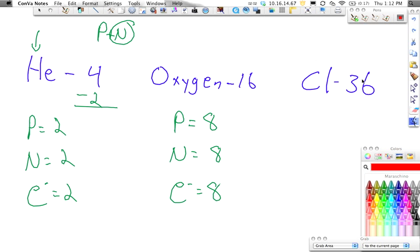My very last one, I have chlorine. It has an atomic number of 17. My neutrons are going to be 36 minus 17, which gives me a total of 19. And then lastly, for my electrons, since it's neutral, protons equal electrons.